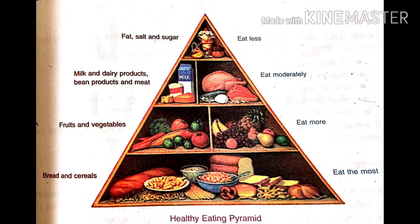Usse oopar waali shelf mein agar dekhe toh wahan space aur kam ho gaya hai, jahan pe rakha gaya hai milk, dairy products, bean products and meat, which we can eat moderately. Aur sabse kam space mein hai fat, salt and sugar, which we need to eat less.